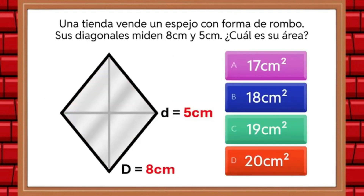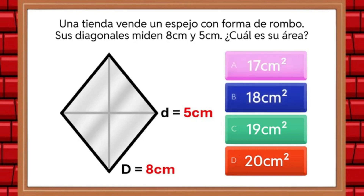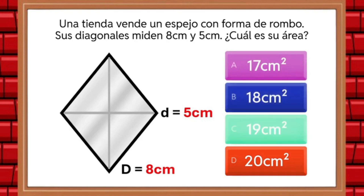In a store, they sell a mirror in the shape of a rhombus. The diagonals of the shape measure 8 centimeters and 5 centimeters. What is the area of the shape? The options are 17, 18, 19, or 20 square centimeters. The answer is 20 square centimeters.